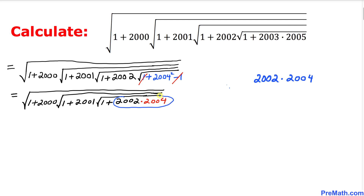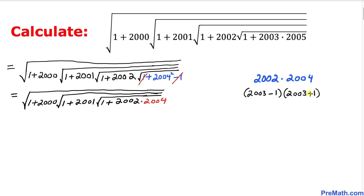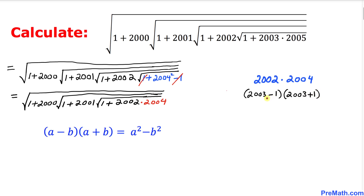Now let's focus on the next part inside this radical: 2002 times 2004. We manipulate this the same way — 2002 as 2003 minus 1 and 2004 as 2003 plus 1. This again represents the product of a difference and a sum, so using the same formula, it becomes 2003 squared minus 1.